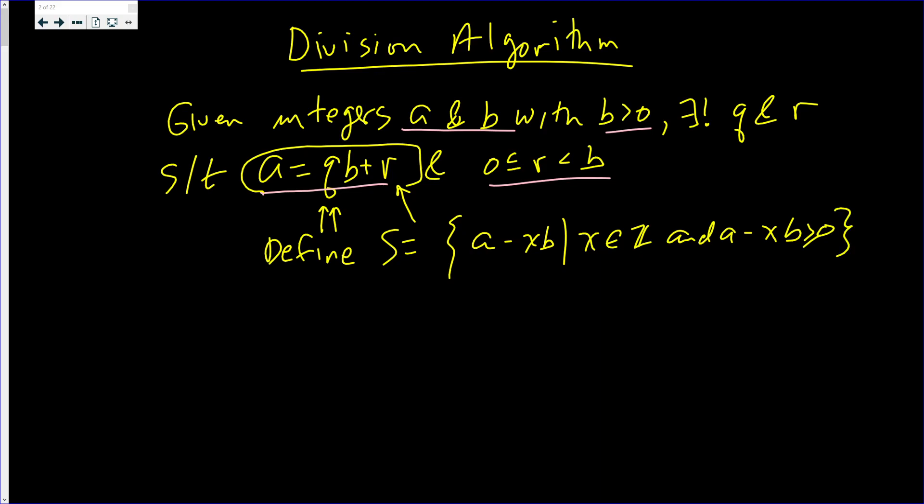That smallest element we're going to call R. So I need to find something in set S, and then I can define R to be the smallest element.